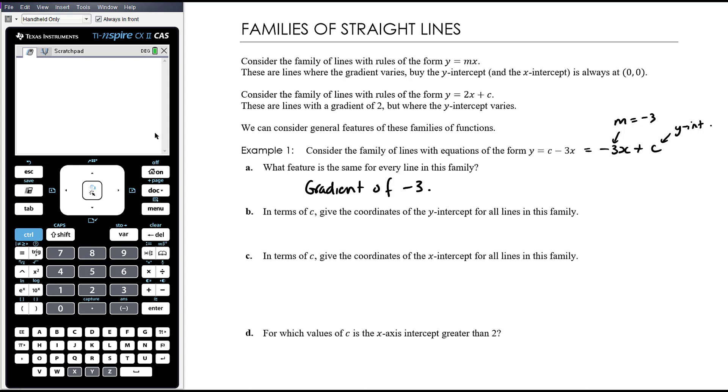In terms of c, give the coordinates of the y-intercept for all lines in this family. Okay, so the y-intercept is when we let x equal 0. Sorry, I haven't left a lot of room here. We let x equal 0. So negative 3x plus c. Oh sorry, we don't need to do that. That's the x-intercept. The y-intercept is when we let x equal 0. That's why I haven't left much space. The y-intercept will just be c. So the y-intercept will be 0c. A lot of students have trouble with this in terms of c. It doesn't mean that your answer should be c equals. Your answer is y-intercept equals. That's what you're finding. But your answer will be in terms of c. Your y-intercept will be described with c in it. So here's our c here. y equals c is the y-coordinate of the y-intercept.